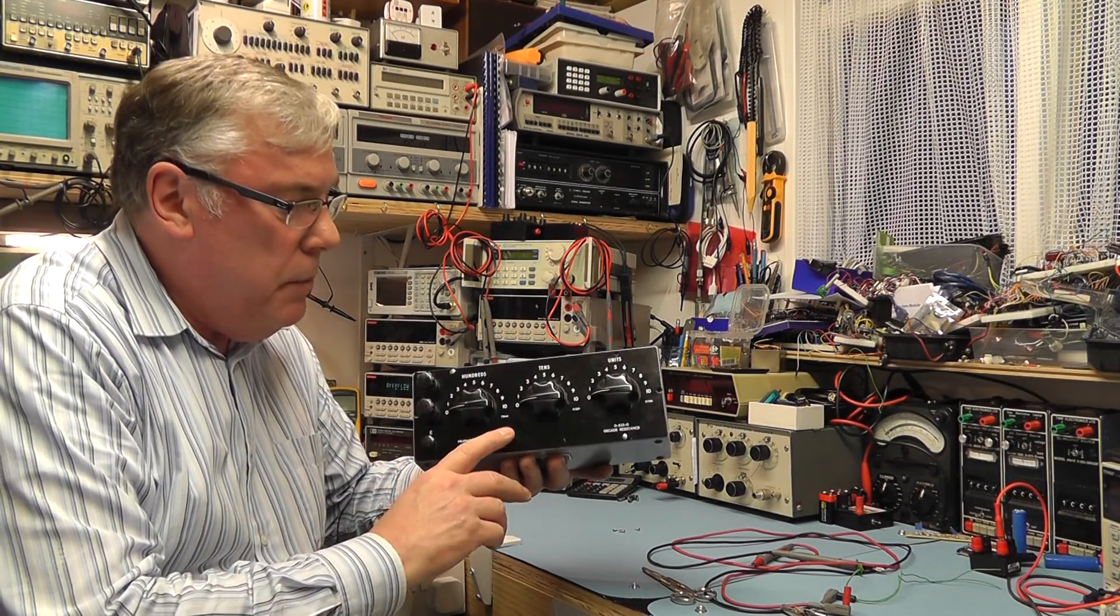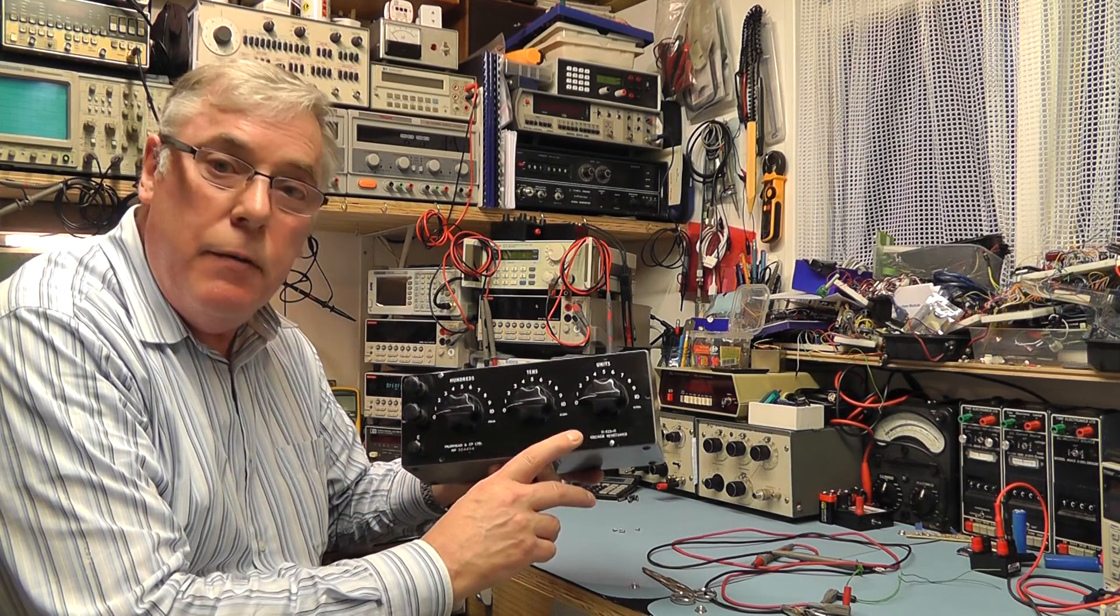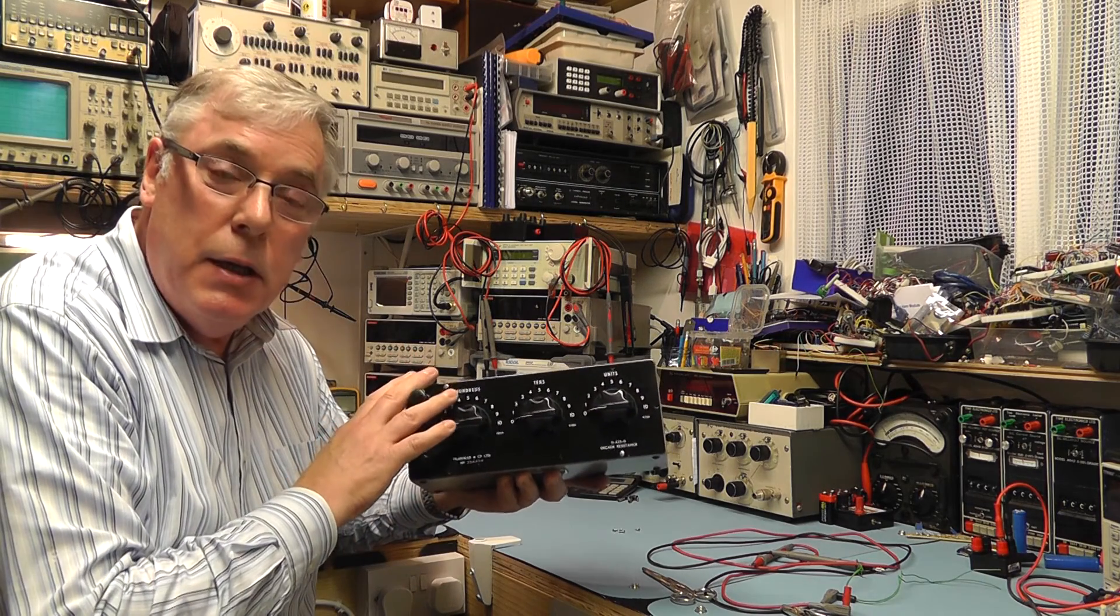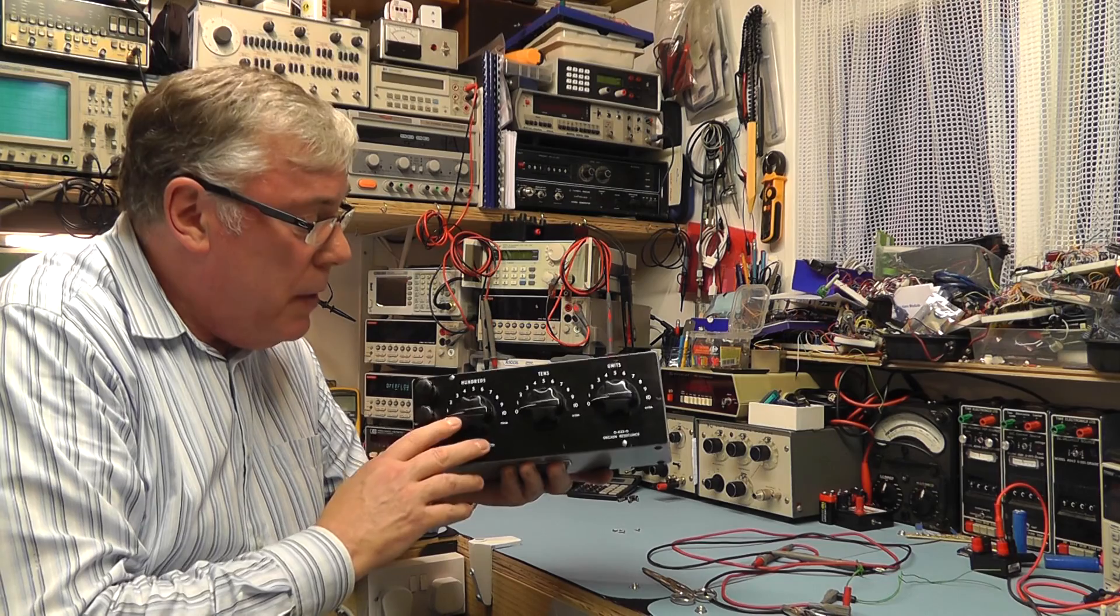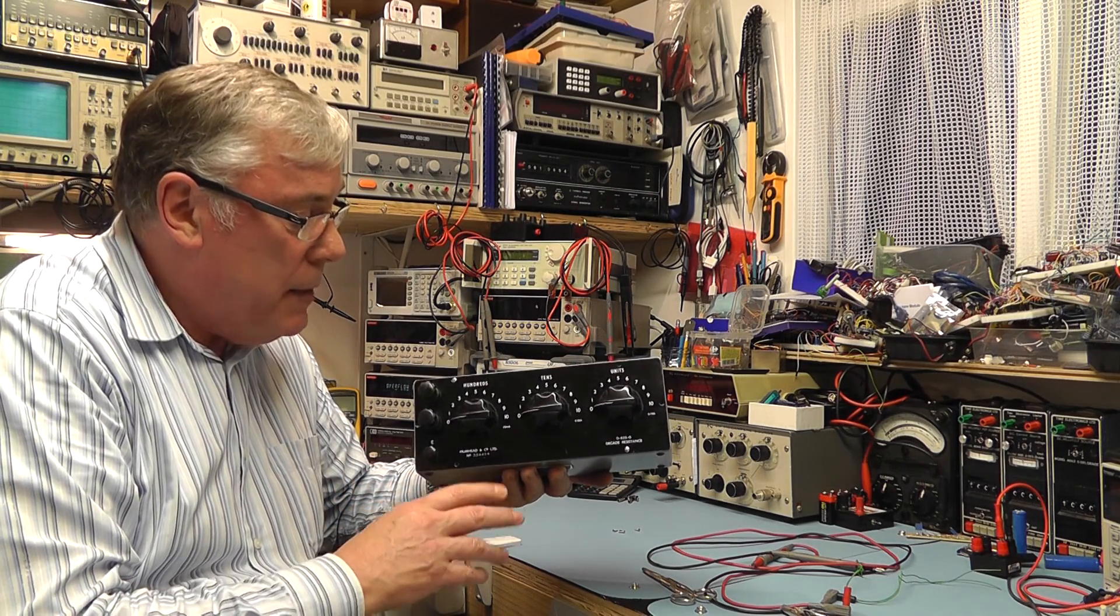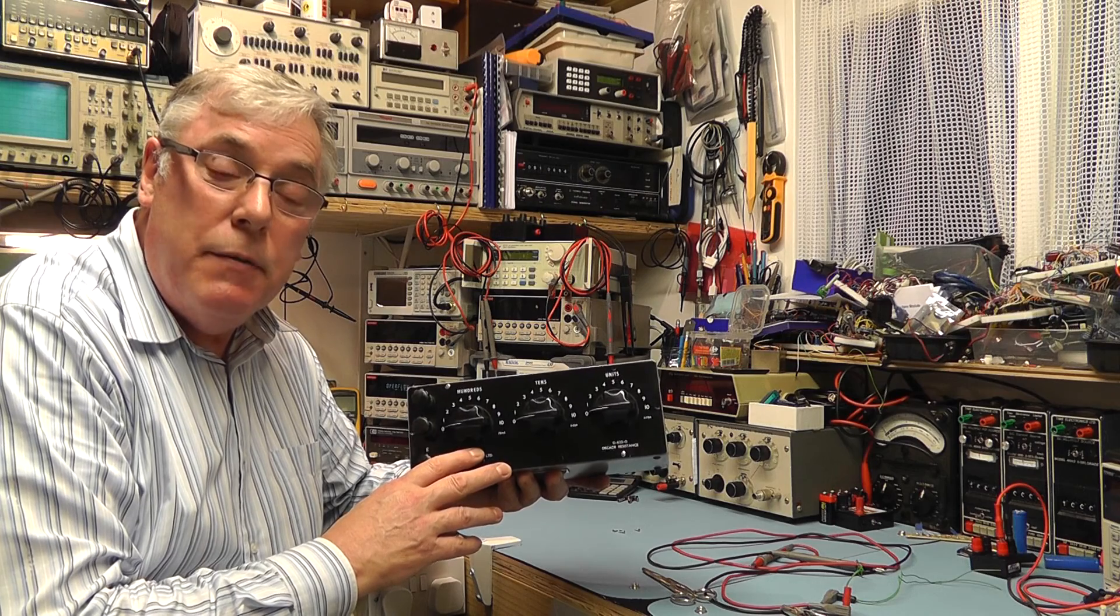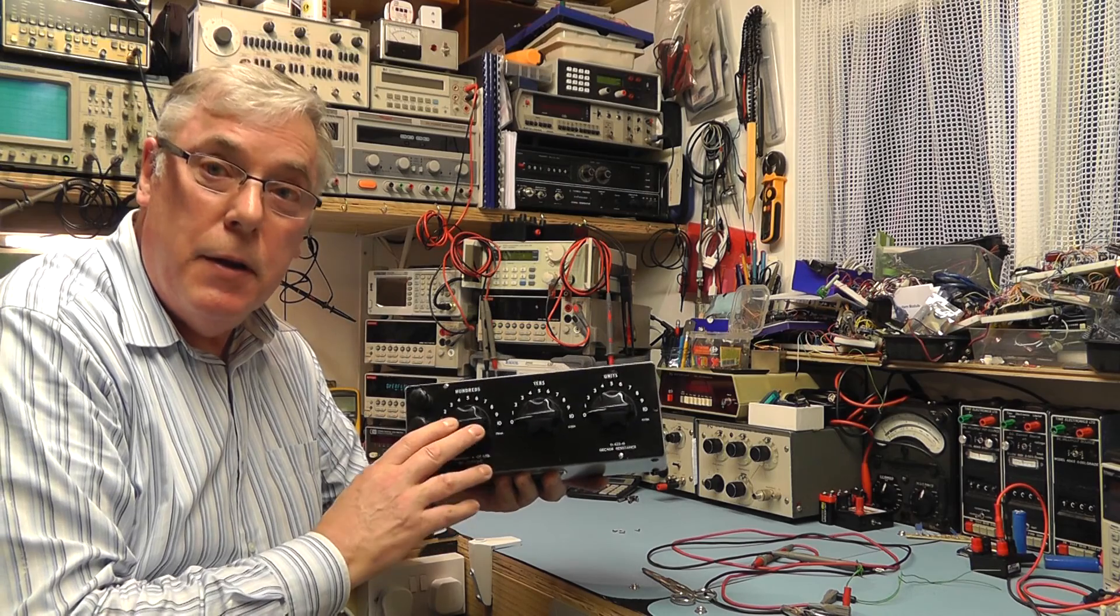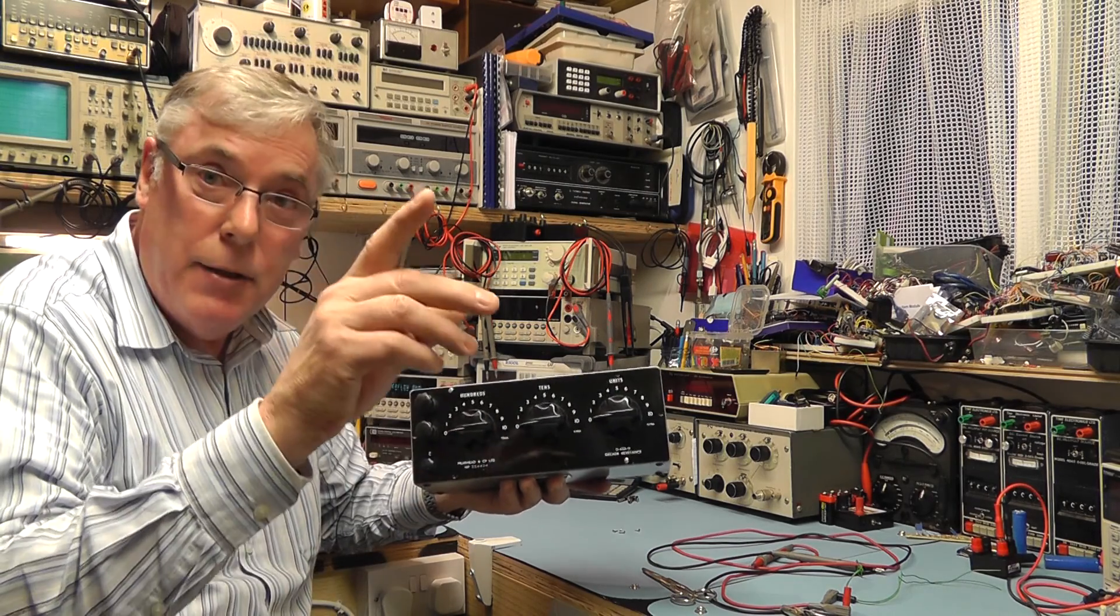So there you have the Muirhead D825G decade resistance box, nice unit. And this particular one I picked up on eBay for quite a reasonable price. I think you can probably pick them up these days for around £20, £30, £40. So there you are, hope you found that useful and see you again next time.